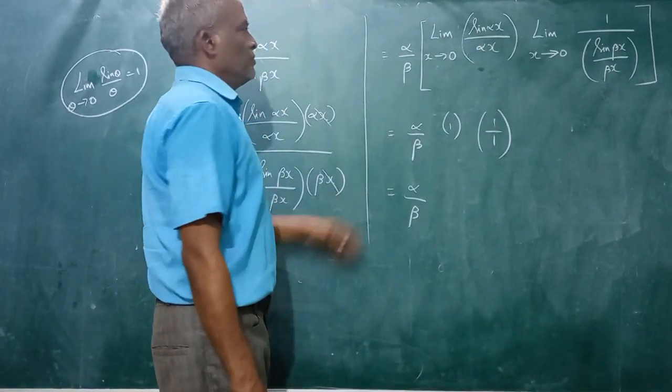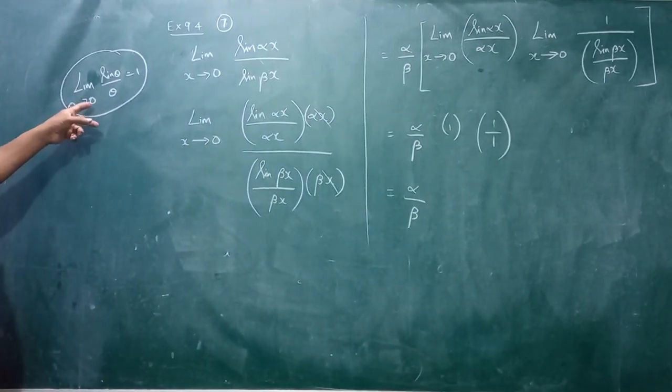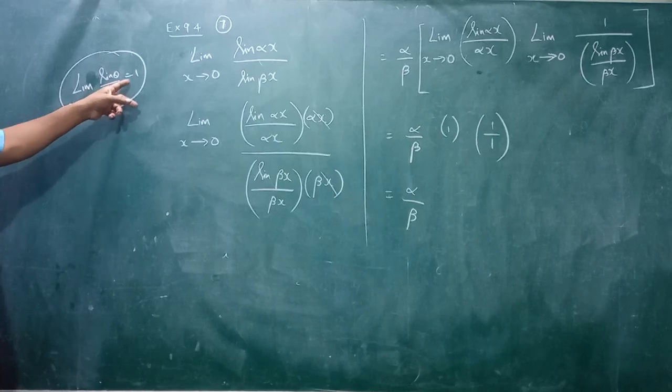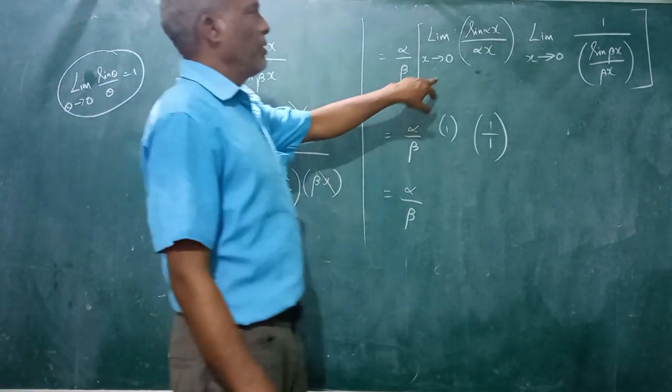So this is of the format, we can make use of the standard result, limit theta tends to 0, sin theta by theta equal to 1, that is sin 0 by 0 is equal to 1, so here what we do is...